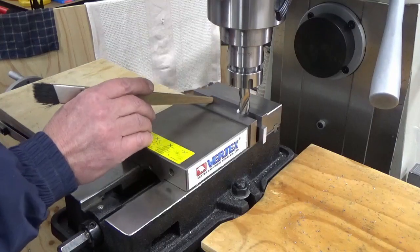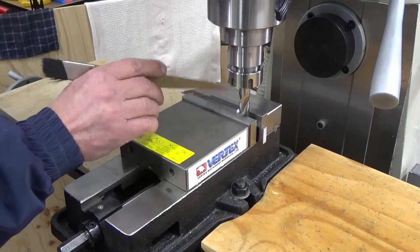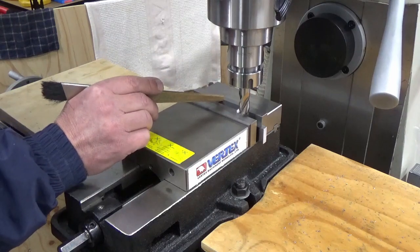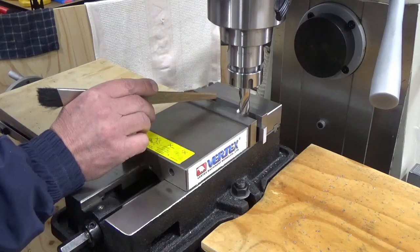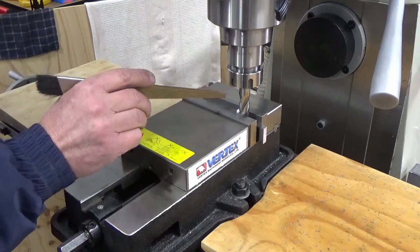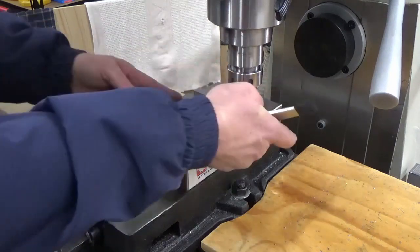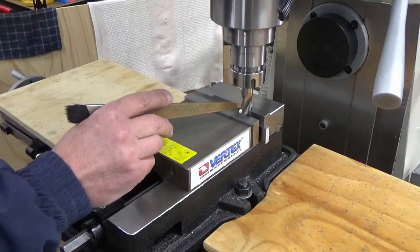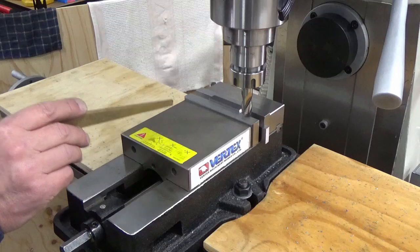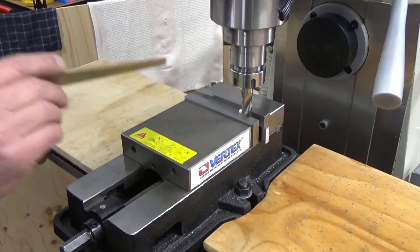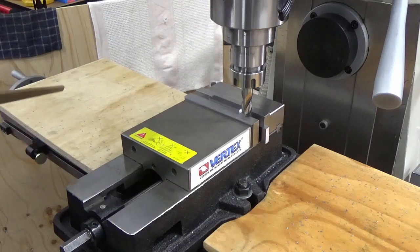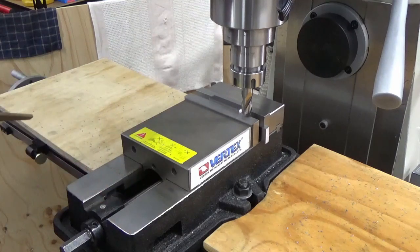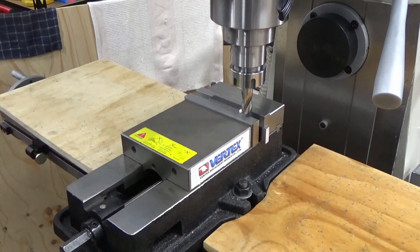So we're on to the third side now. We basically put the boring bar holder into the vice and blow it in so the parallels are tight. So what I'm going to do is do one cut, and once we get that cut done we'll do a measurement. From that measurement we'll adjust the DRO, we'll do the second cut, and that'll be the final cut for that side.